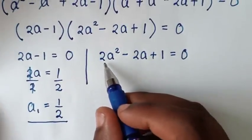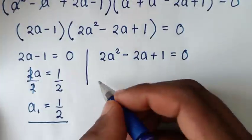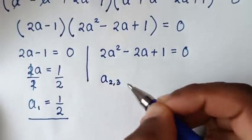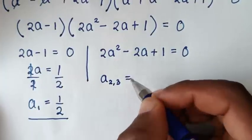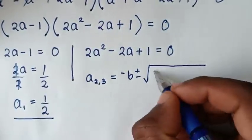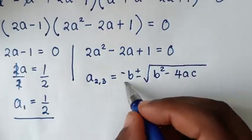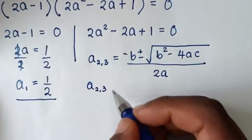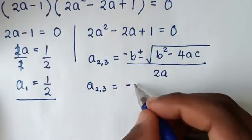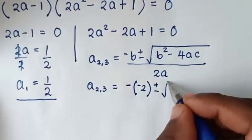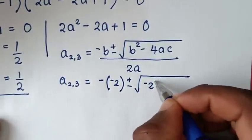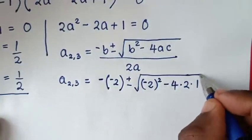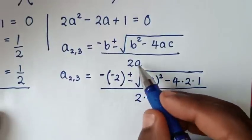Now to solve the second equation, 2a² minus 2a plus 1 equals 0, we'll use the quadratic formula to find a₂ and a₃. The quadratic formula is: negative b plus or minus the square root of (b² minus 4ac), all over 2a. Here b equals negative 2, a equals 2, and c equals 1.